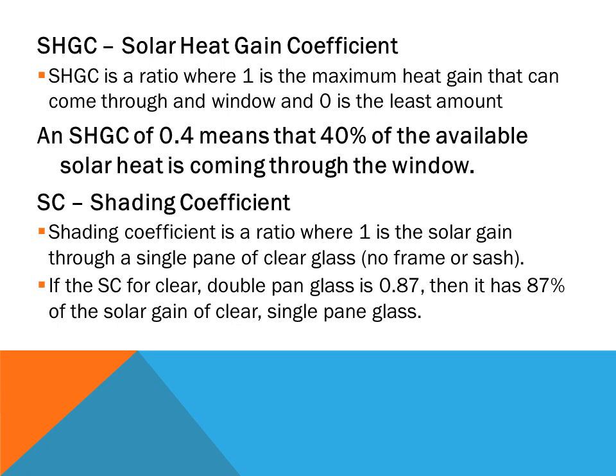Because of this, we look at something called the Solar Heat Gain Coefficient for windows, abbreviated as SHGC. It is a ratio where one is the maximum heat gain that can come through windows and zero is the least amount, and we look at this as percentages. For example, an SHGC of 0.4 means that 40% of the available solar heat is coming through the windows.